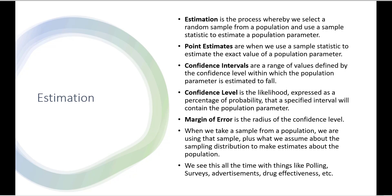You will see this a lot when you look at academic research articles, but also in more everyday things like polling, surveys, advertisements, drug effectiveness, etc. For example, you will frequently hear something like Biden has a 44% approval rating plus or minus 4 percentage points. That plus or minus 4 percentage points is a margin of error, and it is representative of how confident the poller is in that estimate.